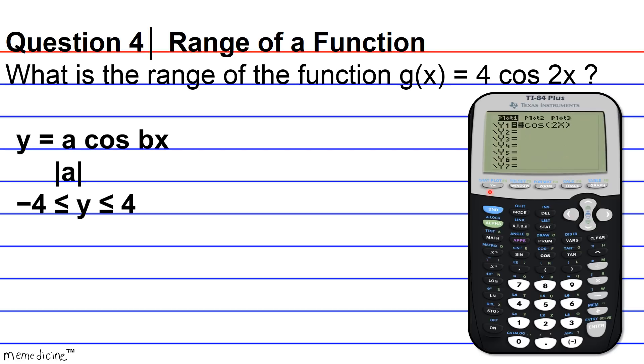And then I go to my equation editor, my Y equals equation editor, and I input the function 4 cos 2X. Don't get hung up on the fact this is G of X. It's just an output or a dependent variable, and that's what Y will always represent.